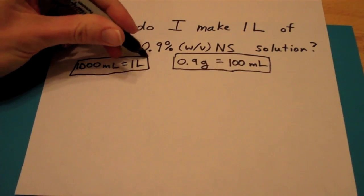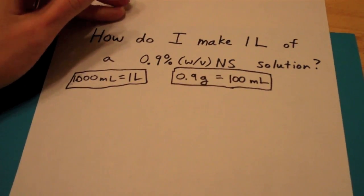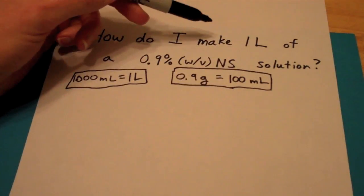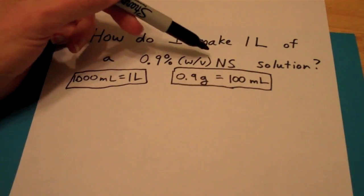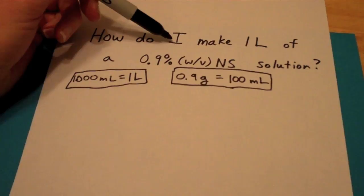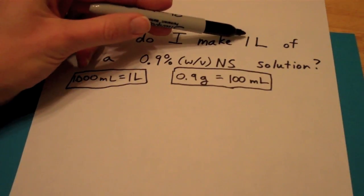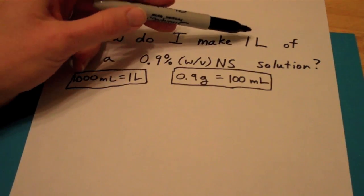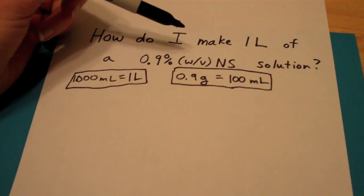So here we've identified what we know to be able to get what we want. What we want is how much salt do I need so I can add water to get a solution of 1 liter of normal saline.